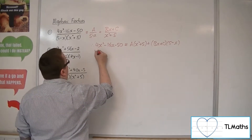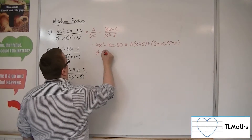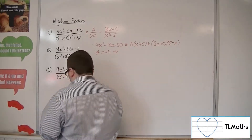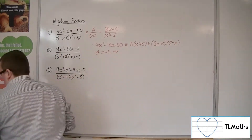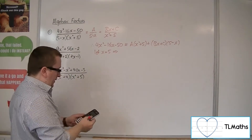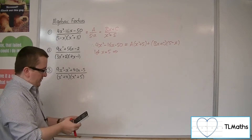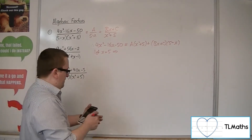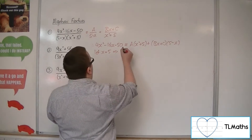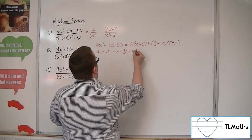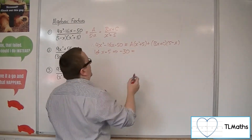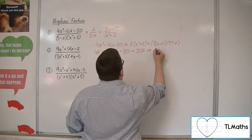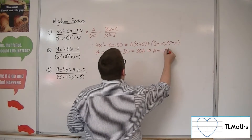Starting by letting x equal 5 to eliminate that bracket, we substitute 5 into the left-hand side: 4 times 5 squared minus 16 times 5 minus 50 gives minus 30. On the right, we get 5 squared plus 5, so 30a. Therefore a must be minus 1.